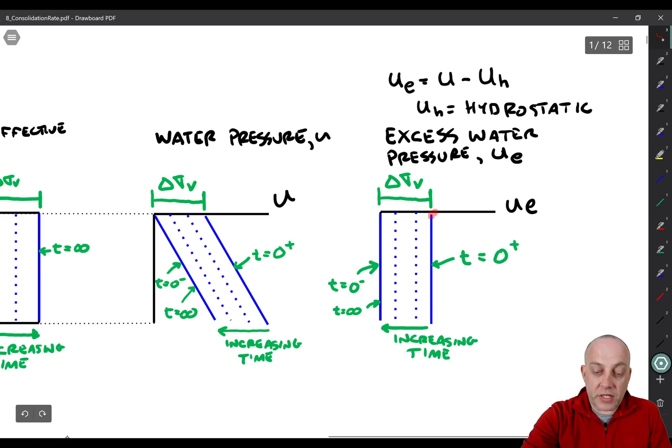Okay, immediately the water pressure goes up to, the excess pressure goes up to delta sigma V, and then slowly over time it decreases. And notice that there's no slope anymore because we've subtracted out the hydrostatic pressure.